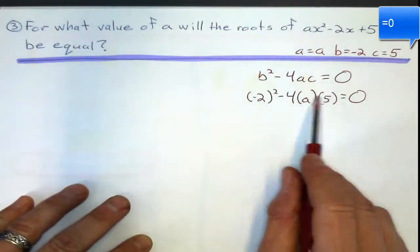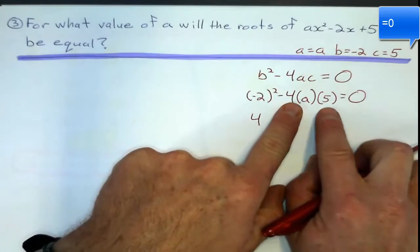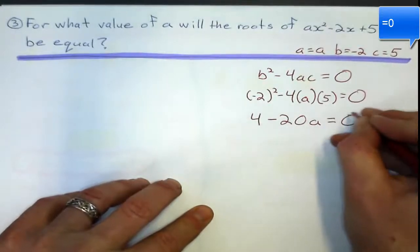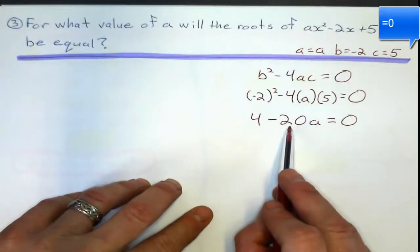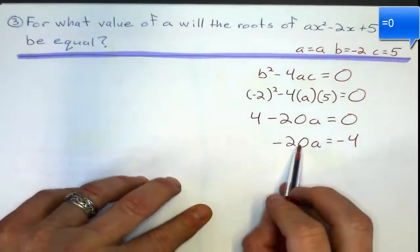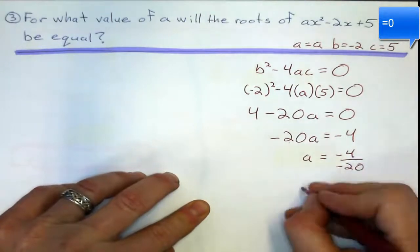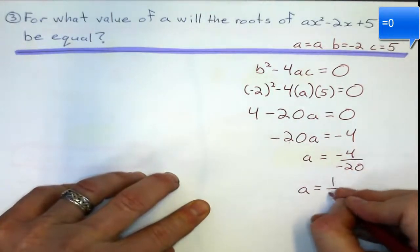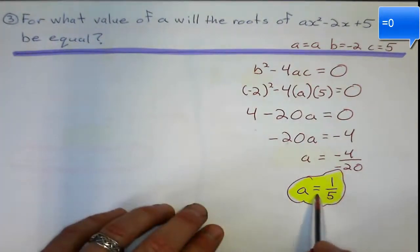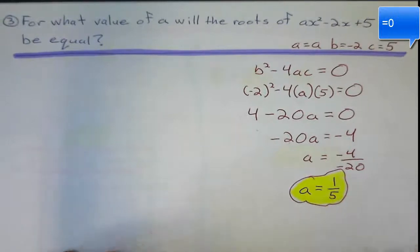The hard part might be just simplifying this bit here. Negative 2 squared is 4, of course. And multiplying all this together, negative 4 times 5 is negative 20 times A is negative 20A equals 0. Now it's just a two-step equation. Subtract 4 from the other side. Negative 20A equals negative 4. And then to solve for A, I'm going to divide by negative 20. So A equals negative 4 divided by negative 20, which is 1 fifth. So what does that mean? That means that if our coefficient is 1 fifth, that parabola is going to be sitting on the x-axis.